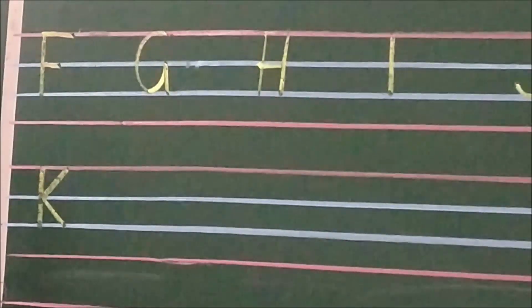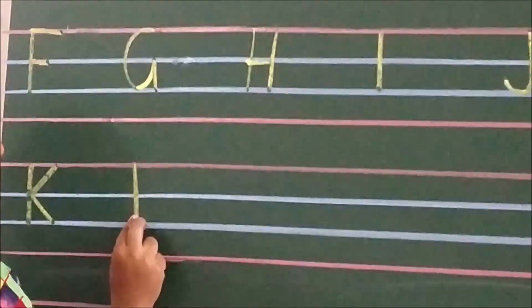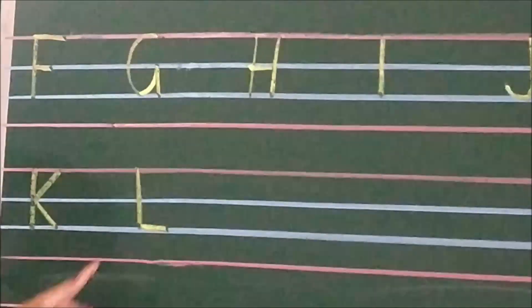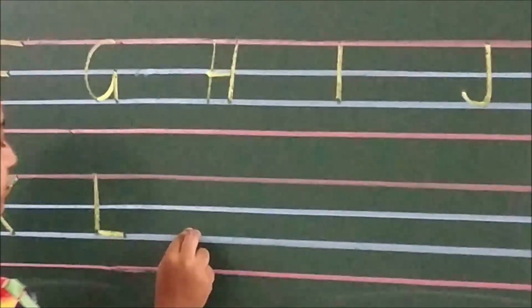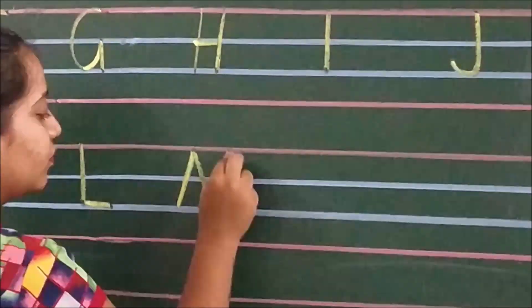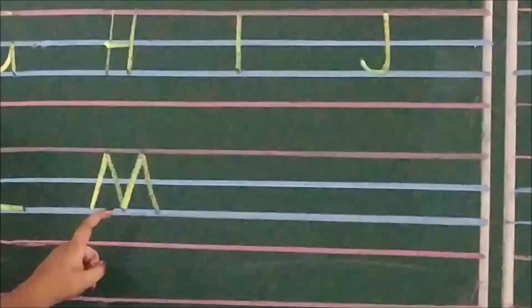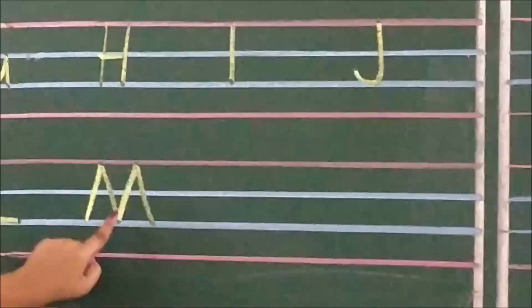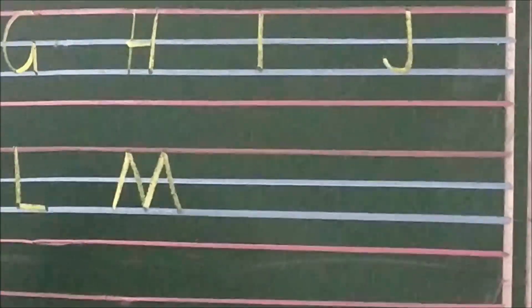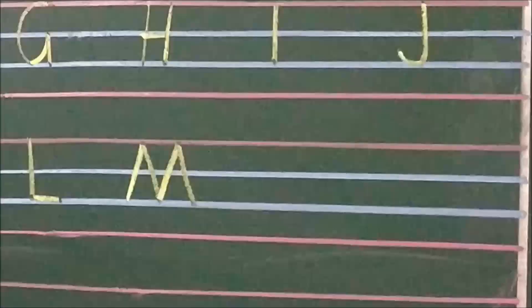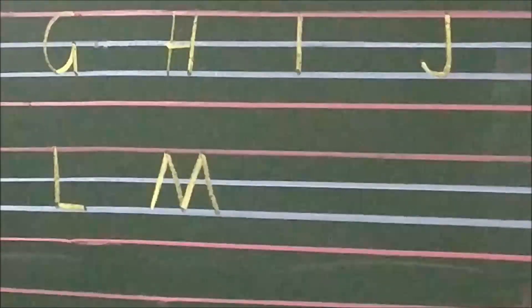K. L. M. See children, can you see all the four lines from the M are slanting? You are not supposed to write M like this. These lines are supposed to be slanting like this.